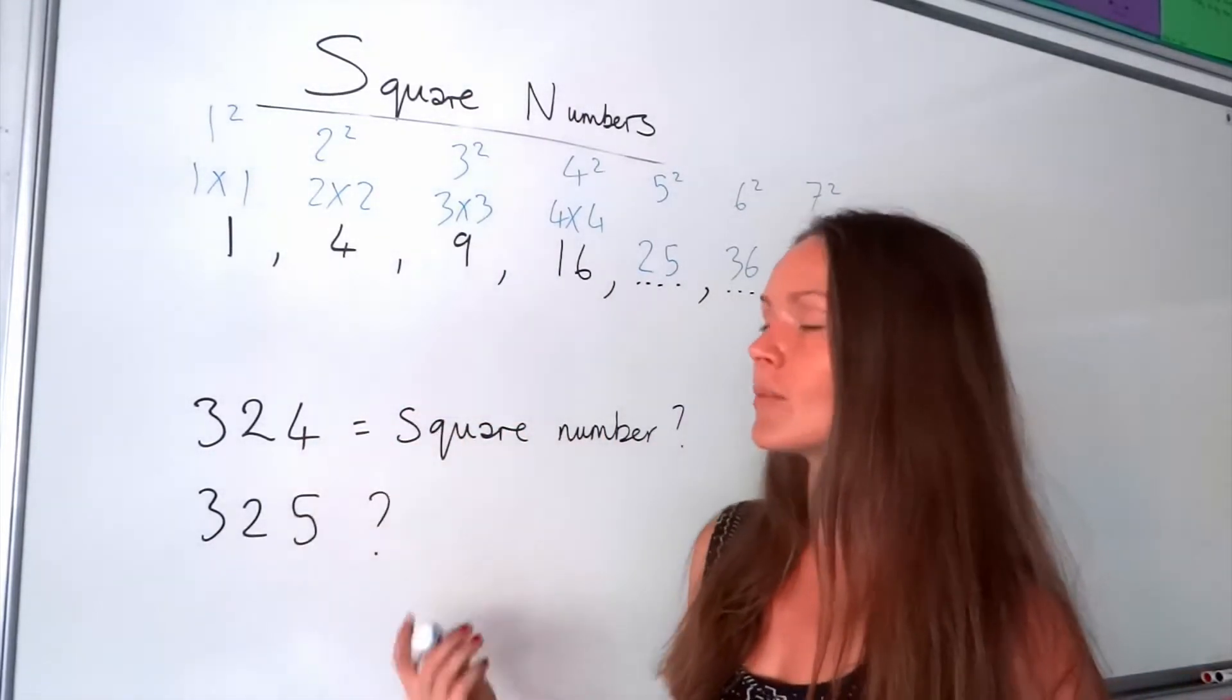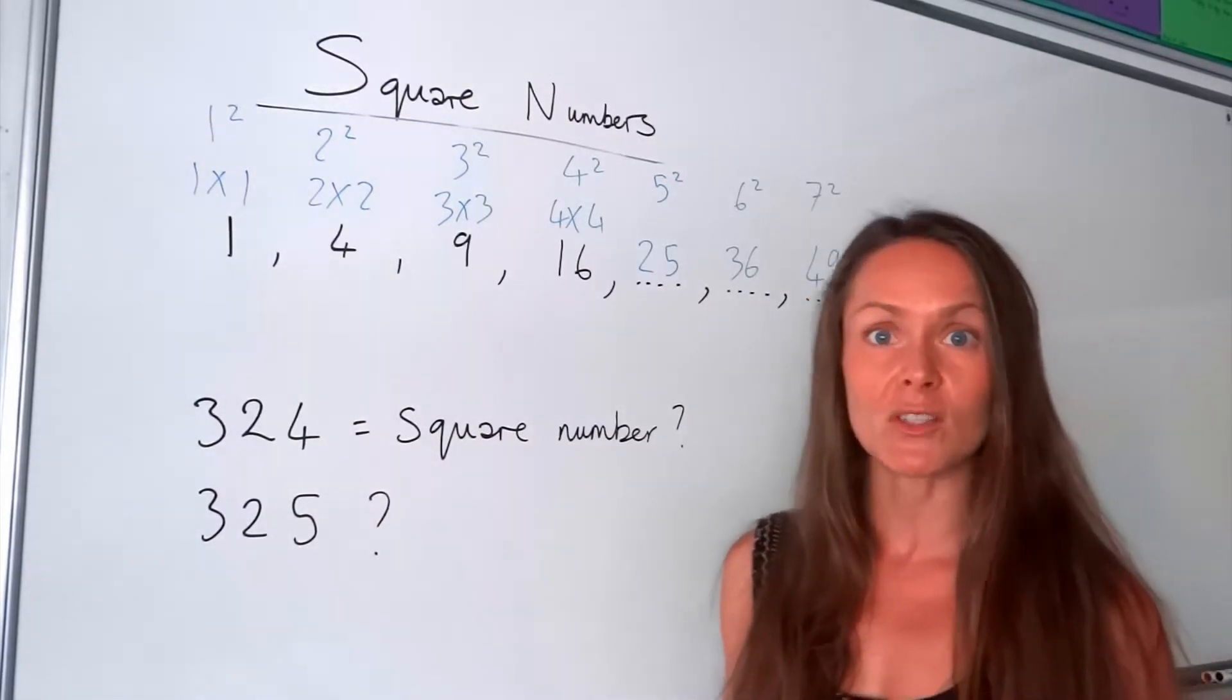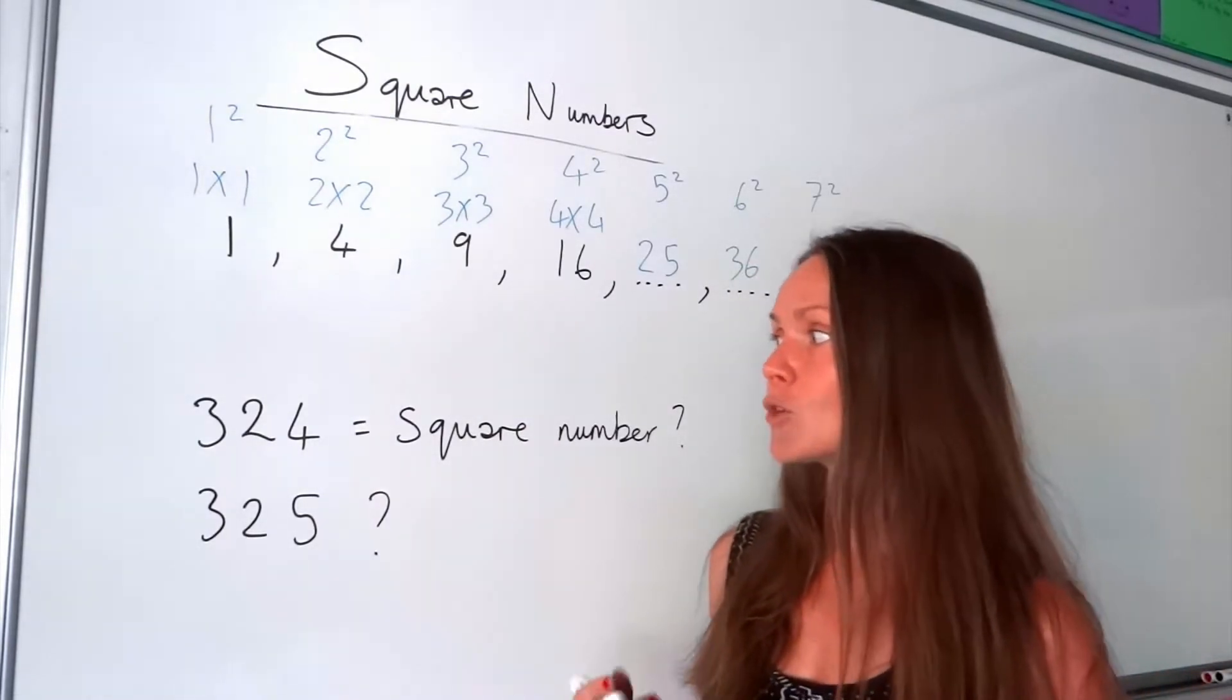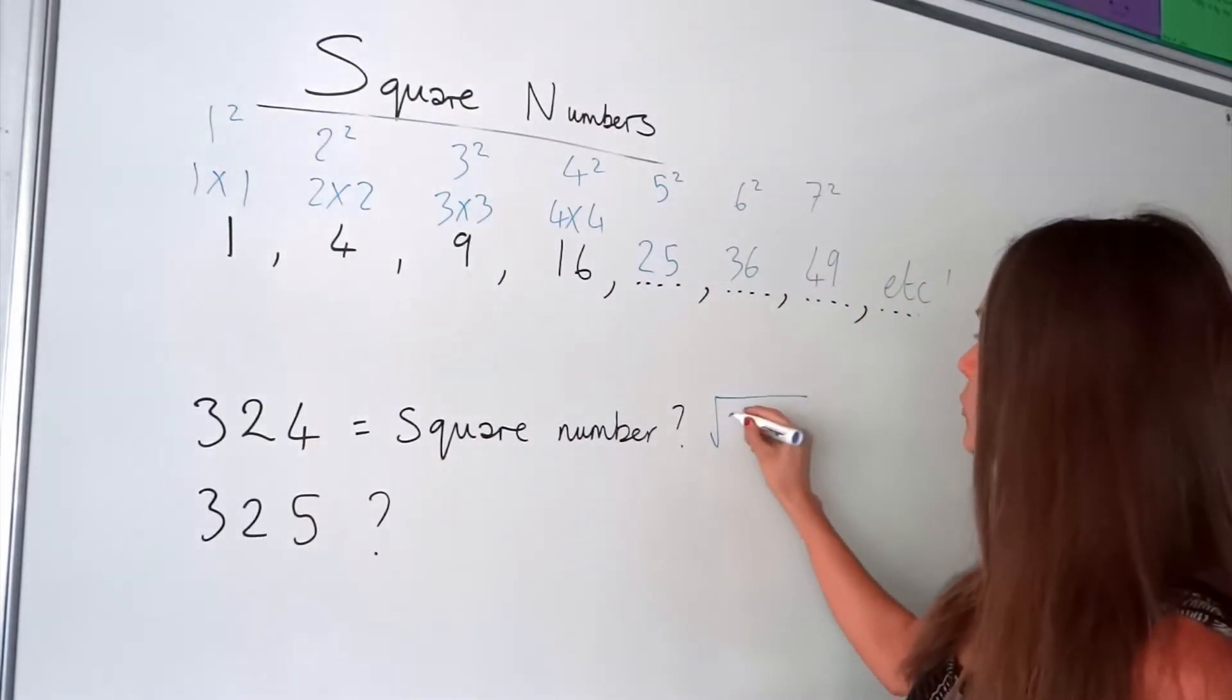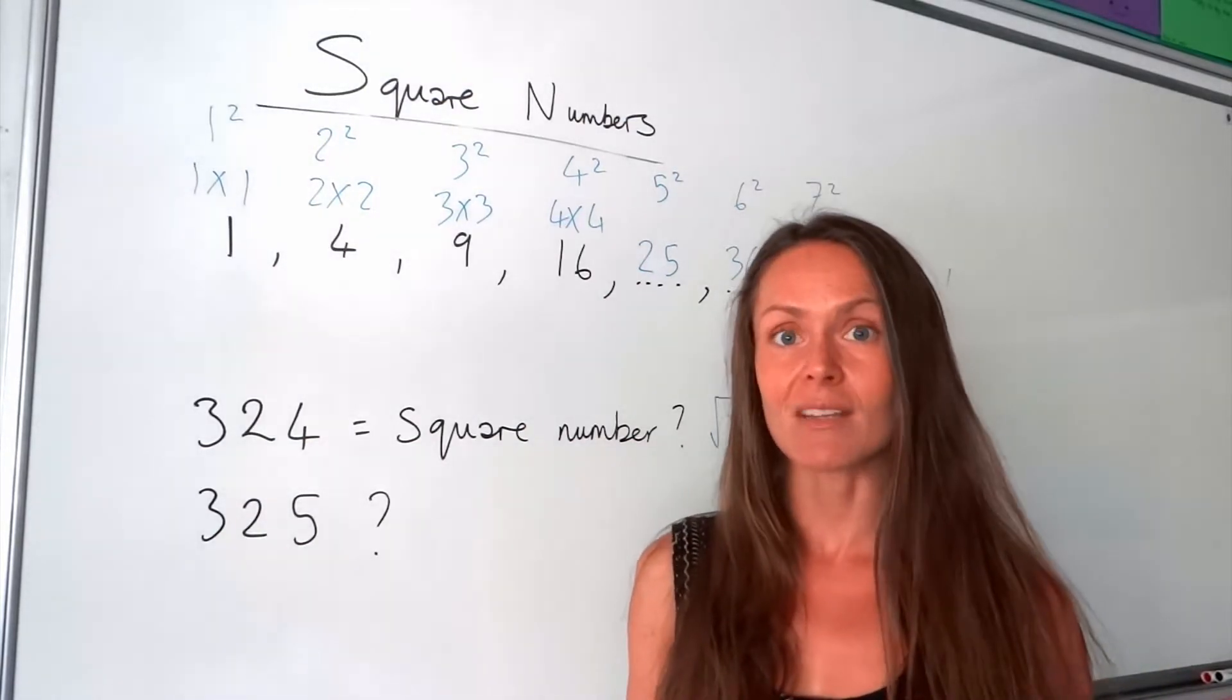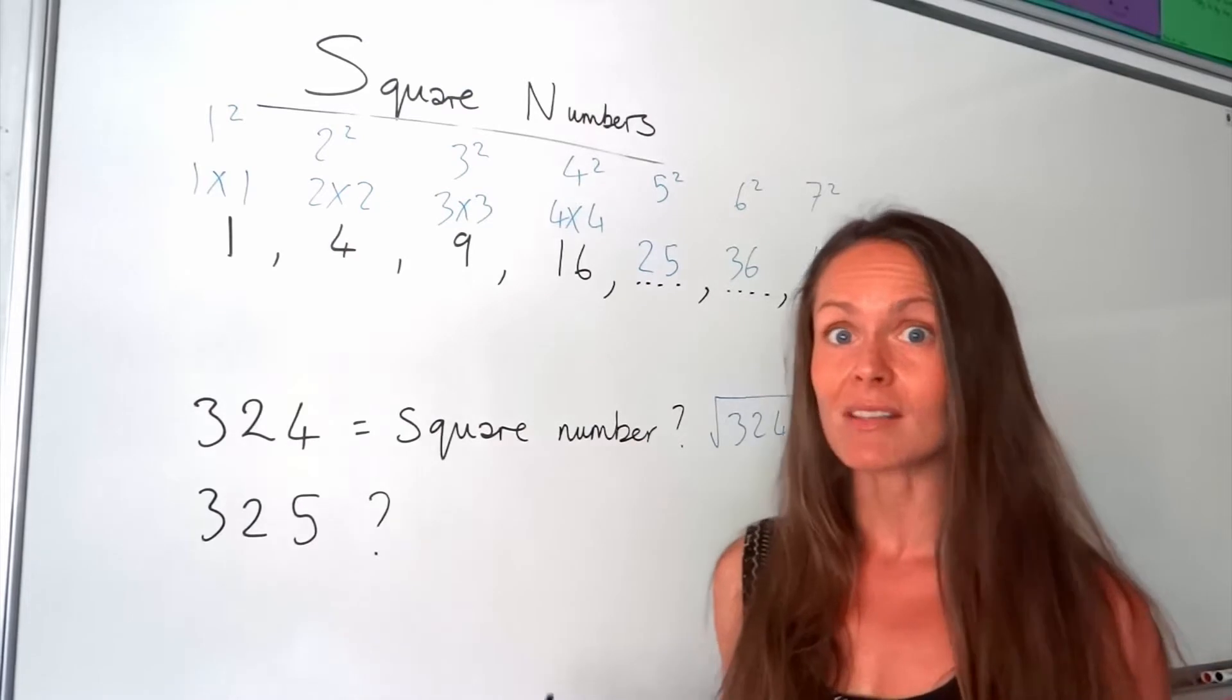So down here, I've got some larger numbers. Now, I'm not suggesting that you remember all the square numbers up to the 300s. I'm just going to explain to you how you can work out whether or not these are square numbers. So in your calculator, you will try and square root the number. If you can square root it to get a nice whole number as your answer, so an integer, it means it's a square number.